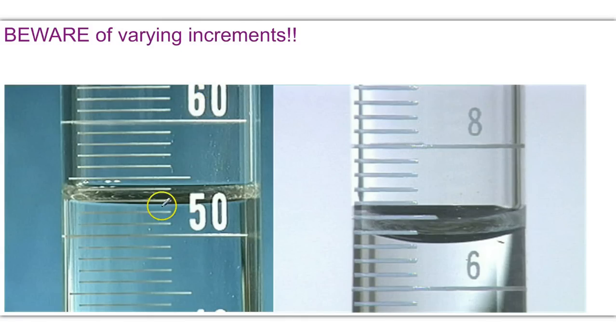So for example, when reading this graduated cylinder, notice that it goes from 50 up to 60. So each of these increments is 1 milliliter. If we count upward, we'd have 50, 51, 52, 53, 54, 55, etc.